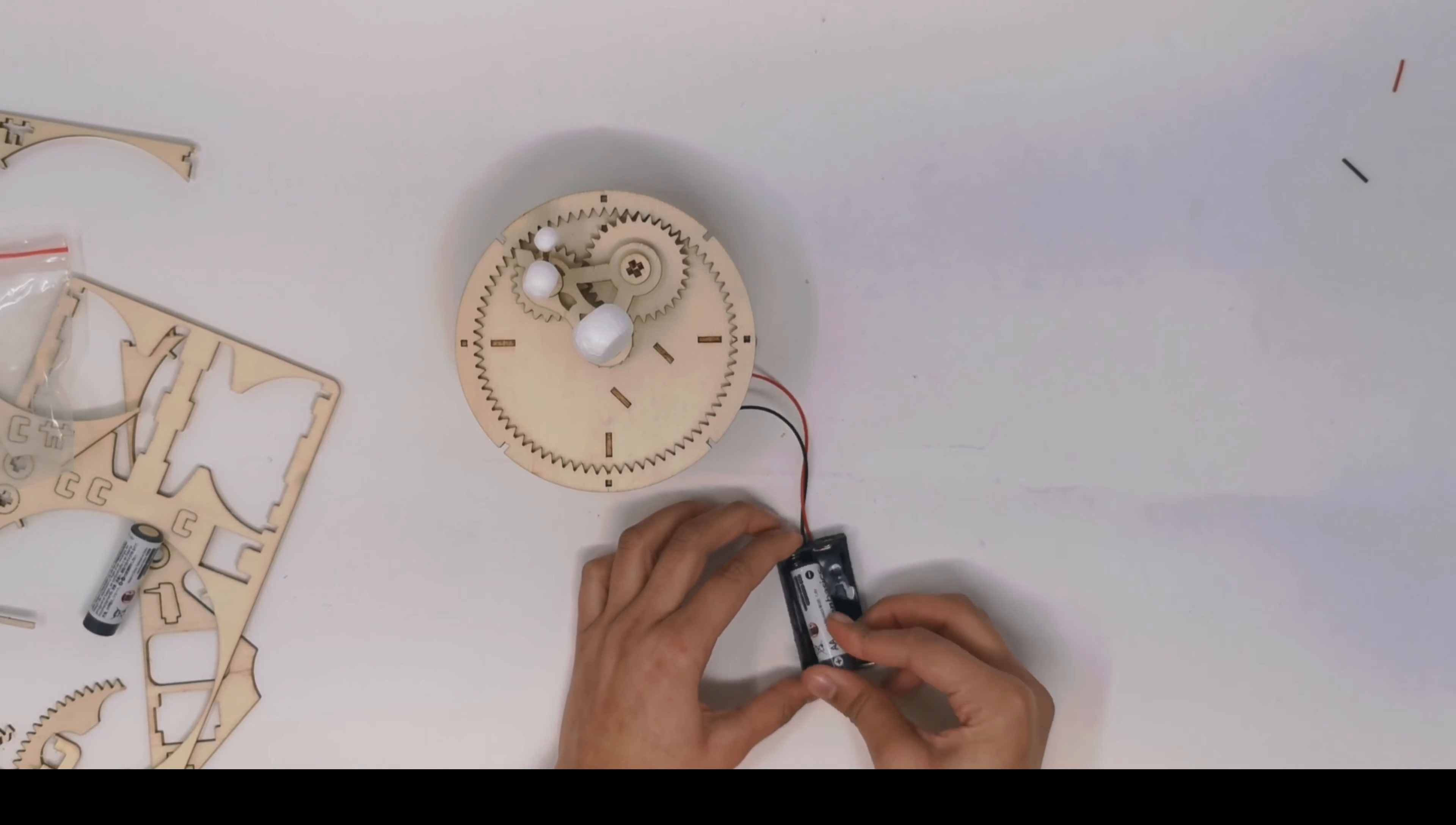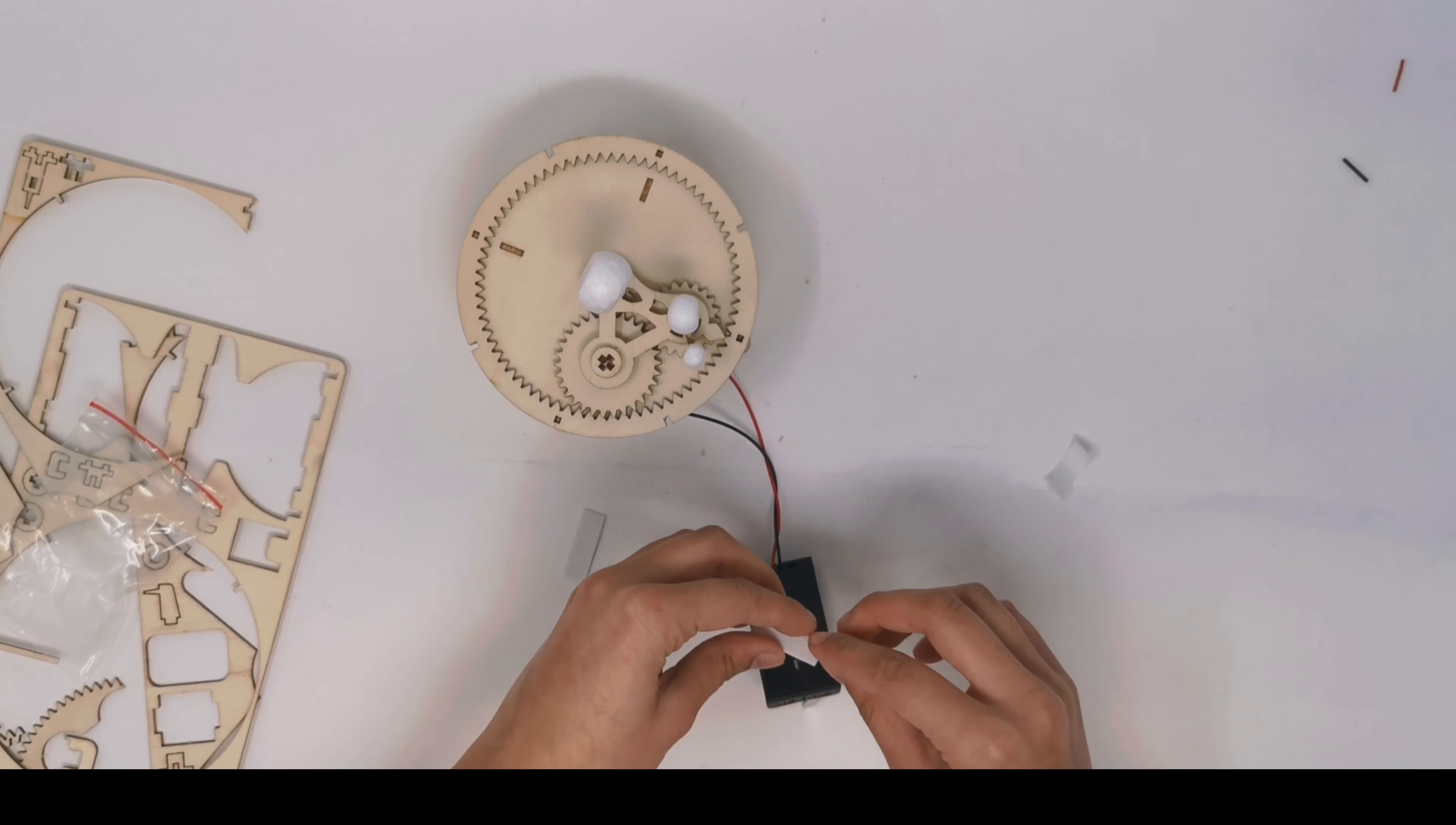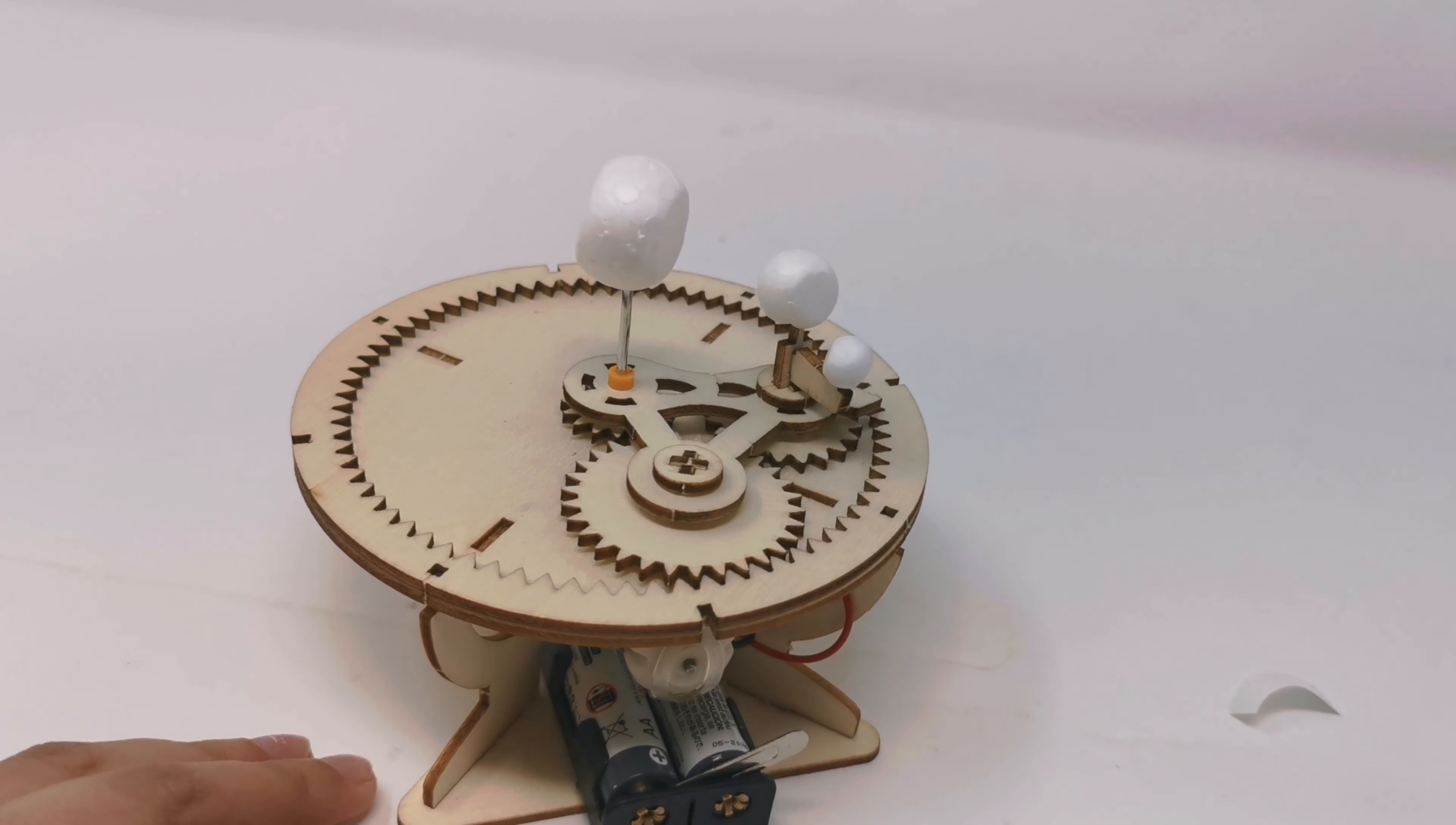Finally, add your batteries. Then, flip your battery pack and add two pieces of double sided tape. This is where you then want to attach it to the bottom. Make sure you have enough room for your switch to move freely. And there you have it, your solar system kit.